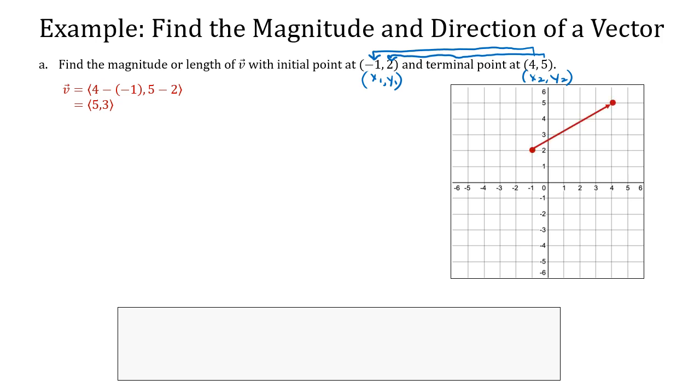Now, we plotted that point. This would be the negative 1 comma 2 as my initial point. And the 4 comma 5 would be my terminal point. And what we said was that the position vector 5 comma 3 would come about from plotting a point at the origin and then going to the point 5 comma 3.